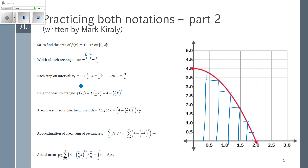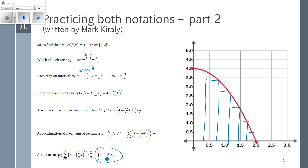For x_k, which I use to find the height, I have a plus Δx times k. Since a is zero and Δx is 2/n, x_k equals 2k/n. I plug that into my function to get the height: four minus the quantity (2k/n) squared. I then multiply that by my width 2/n to get the area of one rectangle, then add up all the rectangles and send that to an infinite number. As you can see, saying 'the integral from zero to two of 4 − x² with respect to x' is a much easier way of describing all of this.